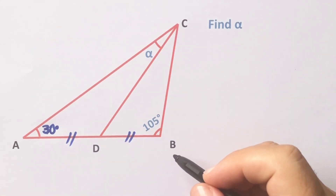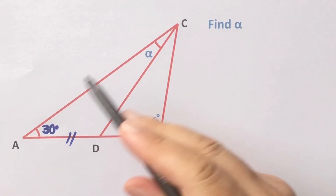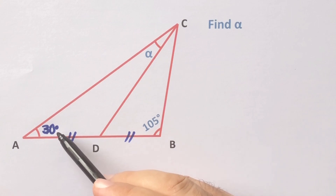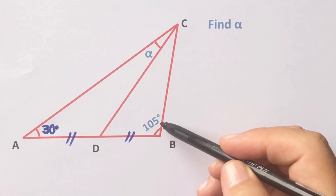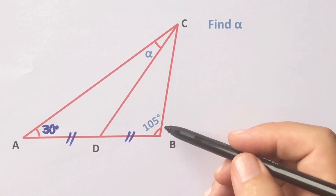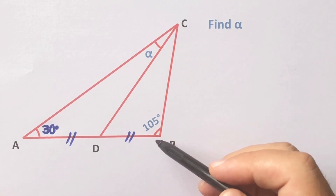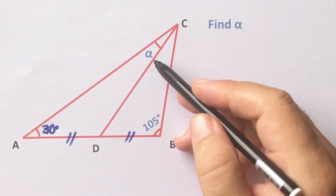In this video, we have one triangle. Here is 30 degrees, here is 105 degrees, these two parts are equal, and alpha is x.